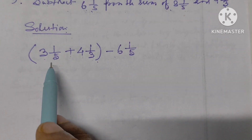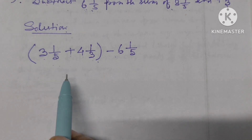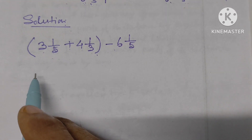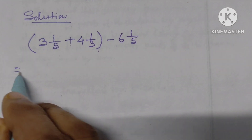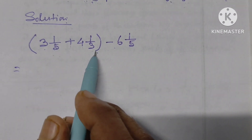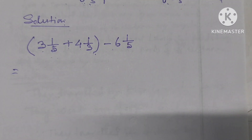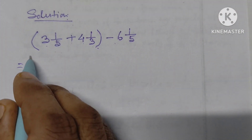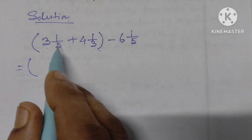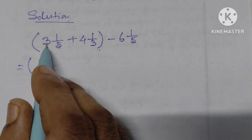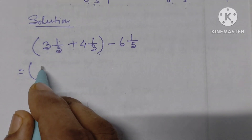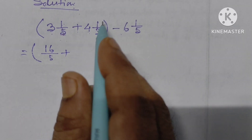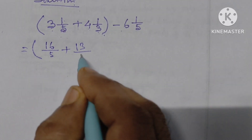These are mixed fractions; we have to change them into improper fractions first. We have 16 by 5. Plus, 3 times are going to be 3 by 3.